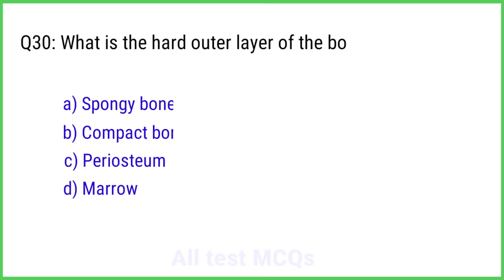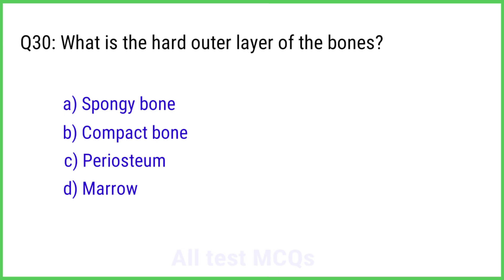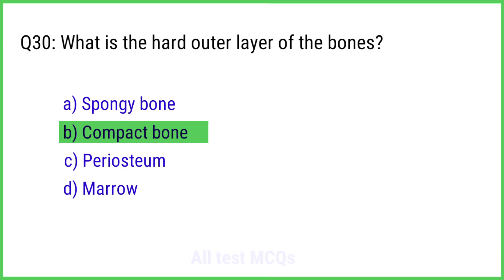Question No. 30. What is the hard outer layer of the bones? The right answer is Option B: Compact bone.